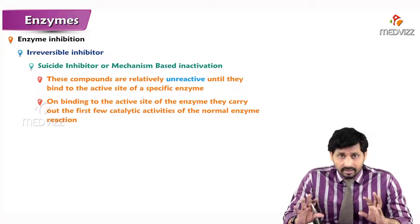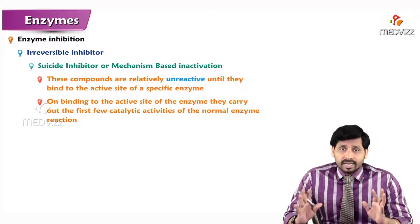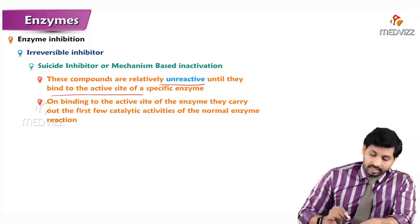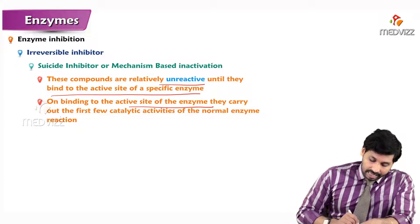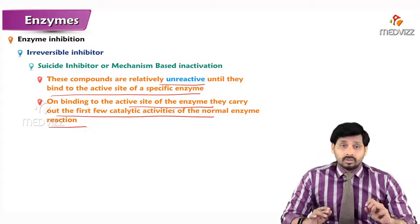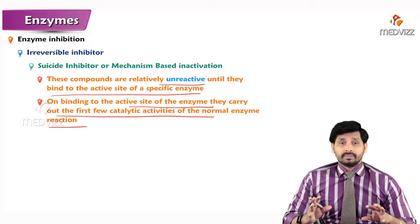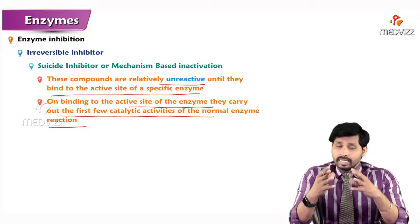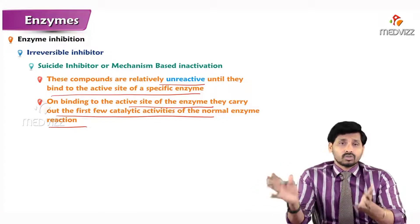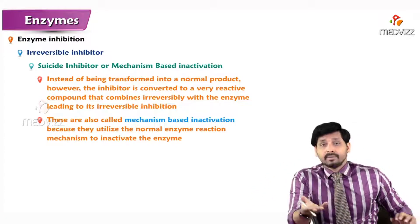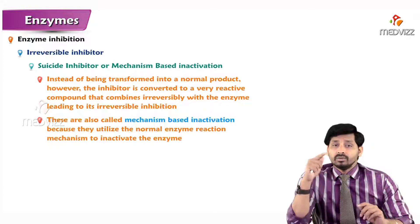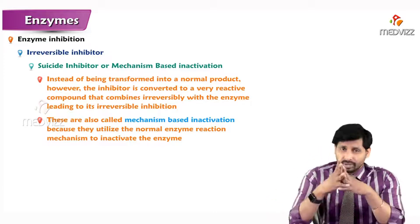The third category is suicide inhibition, otherwise known as mechanism-based inactivation. These compounds are relatively unreactive until they bind to the active site of a specific enzyme. On binding, they carry out the first few catalytic activities of the normal enzyme reaction, but then the reaction is inactivated. Instead of being transformed into a normal product, the inhibitor is converted to a very reactive compound that combines irreversibly with the enzyme.